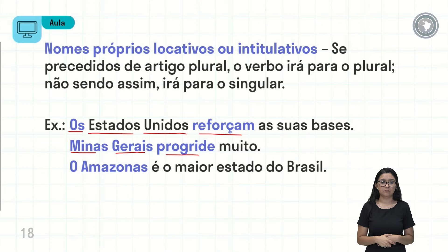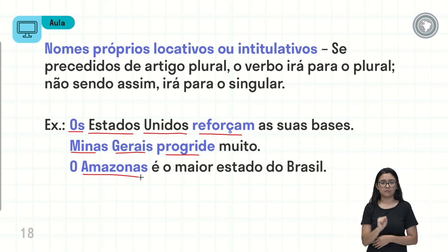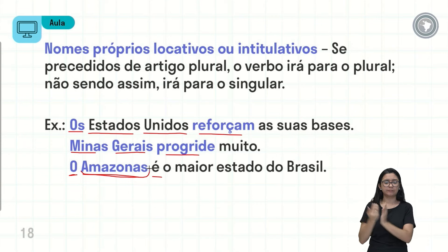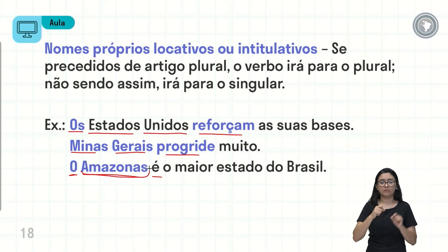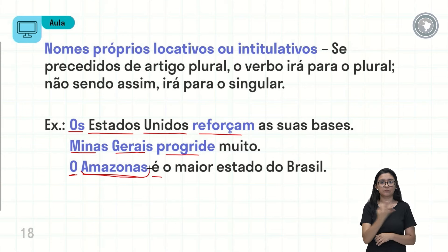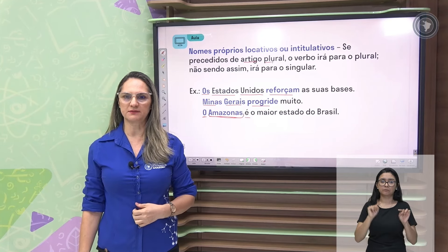A palavra 'Amazonas', embora pareça plural, usa o artigo 'o' no singular, então o verbo fica no singular. Isso porque o nome deriva das lendas gregas — os portugueses, ao chegar ao Brasil, imaginaram que havia Amazonas naquele território, confundindo-as com os indígenas. Essa é a regra: o verbo no plural depende do uso do artigo. Essa foi a nossa aula sobre concordância verbal — até uma próxima aula!